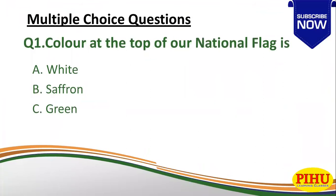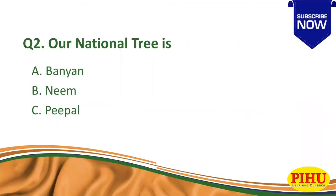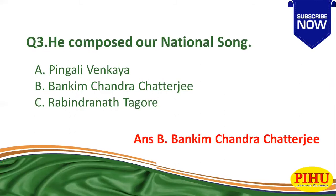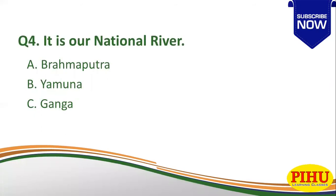Multiple choice questions. Question number 1: Color at the top of our national flag is — B. Saffron. Question number 2: Our national tree is — A. Banyan tree. Question number 3: He composed our national song — B. Bankim Chandra Chatterjee. Question number 4: It is our national river — the right answer is Ganga.